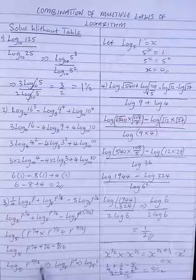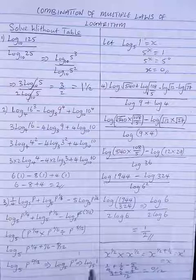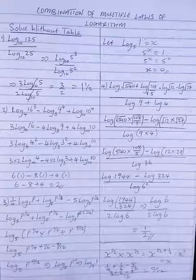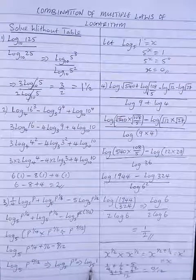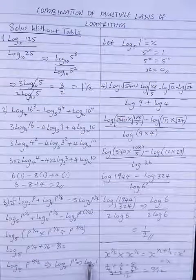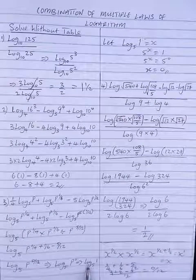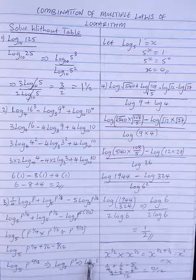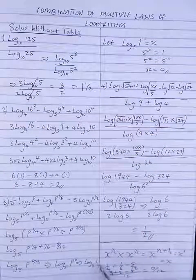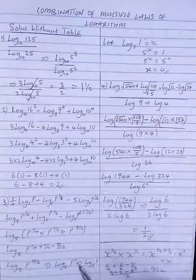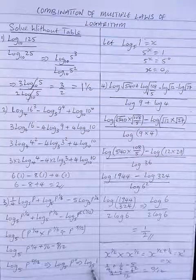Since the power is zero, we have p raised to zero, which equals 1 by the zero index law. This leaves us with logarithm of 1 to base 5. From the special laws of logarithm treated in previous videos, logarithm of 1 to any base at all is equal to zero.